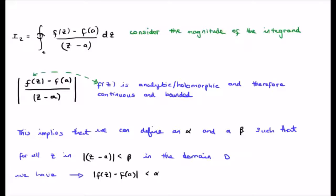Next, we consider the magnitude of the integrand. So, the integrand here is what I was always describing as capital F of z. So, let's just look at its magnitude. Now, small f of z is analytic. I've said that from the start.